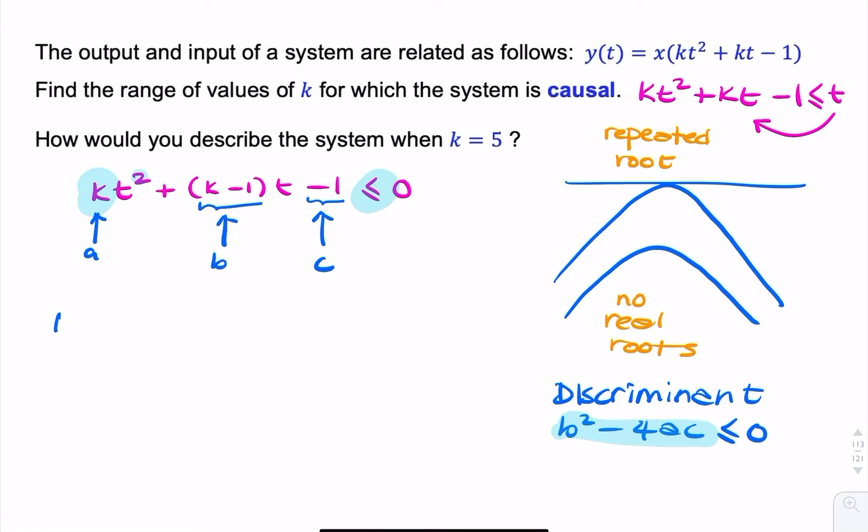So I can say b squared minus 4ac is k minus 1 squared minus 4k times minus 1. And that has to be less than or equal to 0.